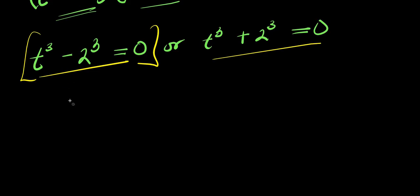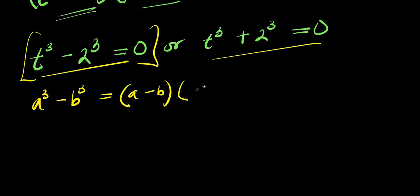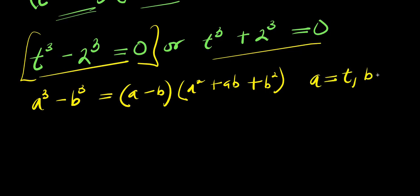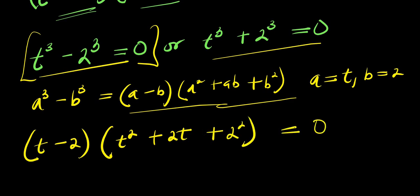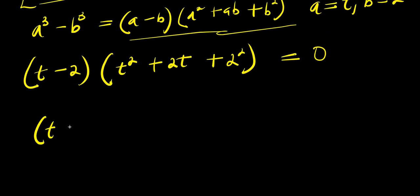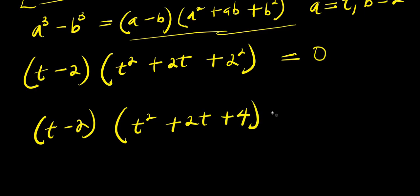To solve this we are going to use this identity to expand. If you have a power 3 minus b power 3, this equals a minus b times a squared plus ab plus b to the power of 2. In this case we have a equals t and b equals 2. So we have a minus b, that is t minus 2, times t power 2 plus 2t plus 2t power 2, and this equals 0. So from here we have t minus 2 times t squared plus 2t plus 4, equals 0.